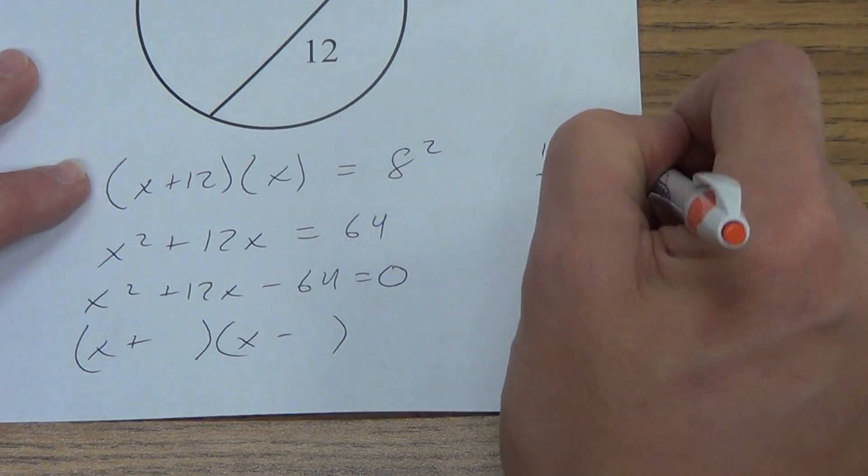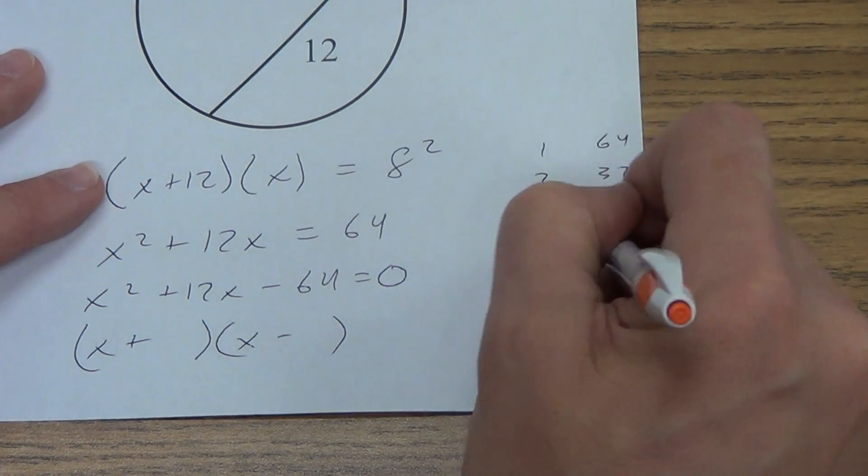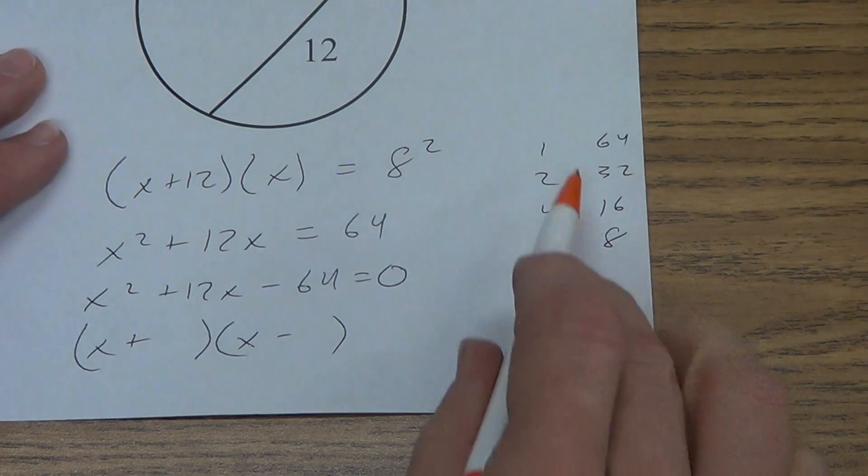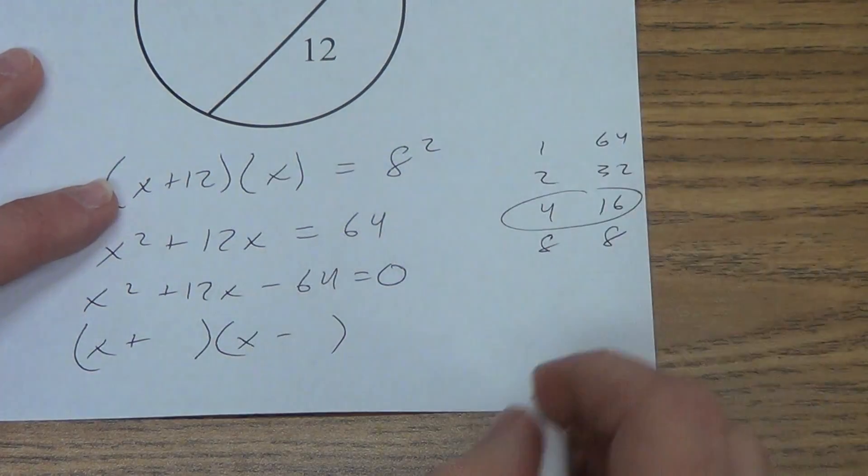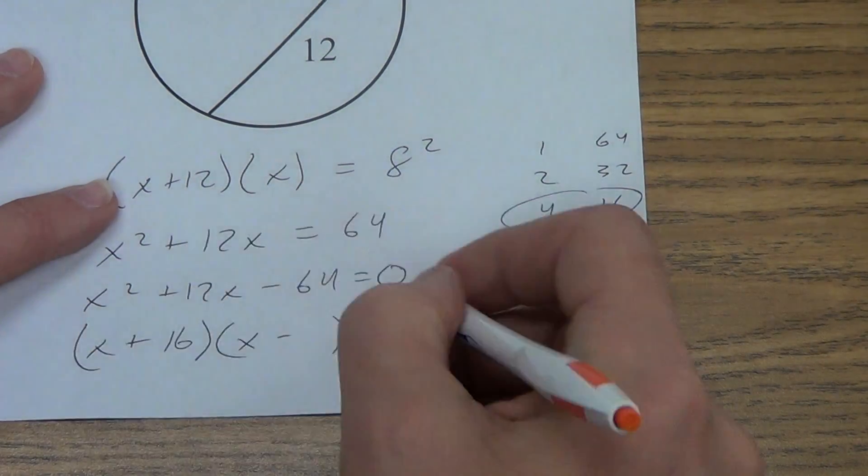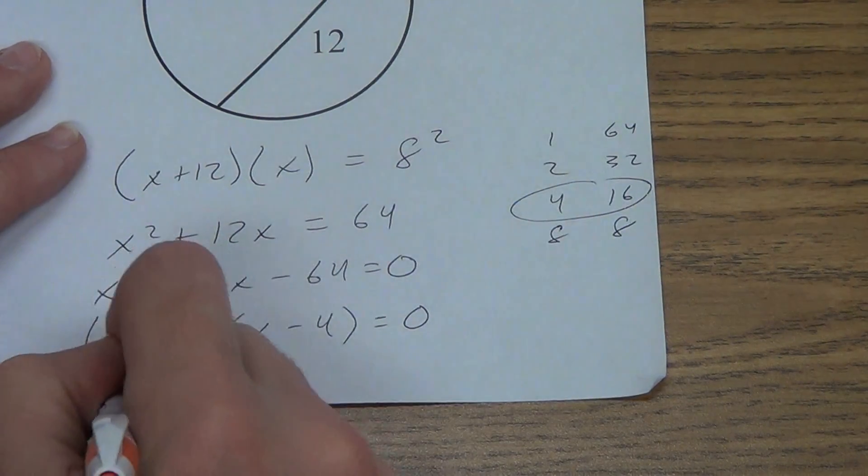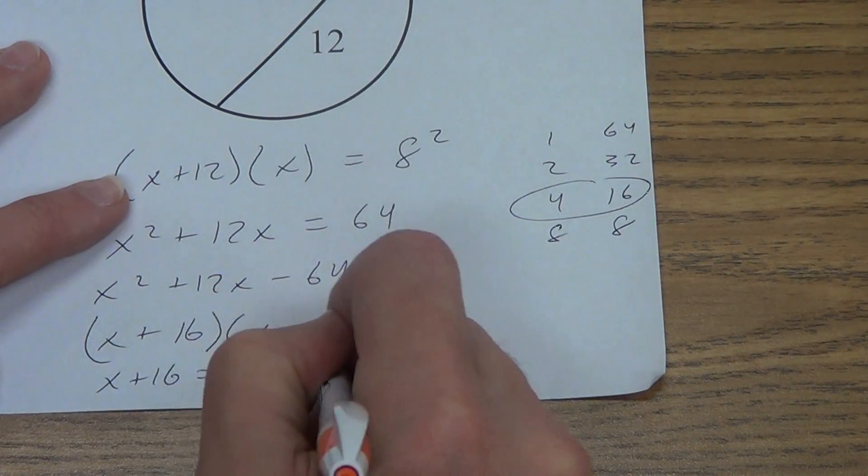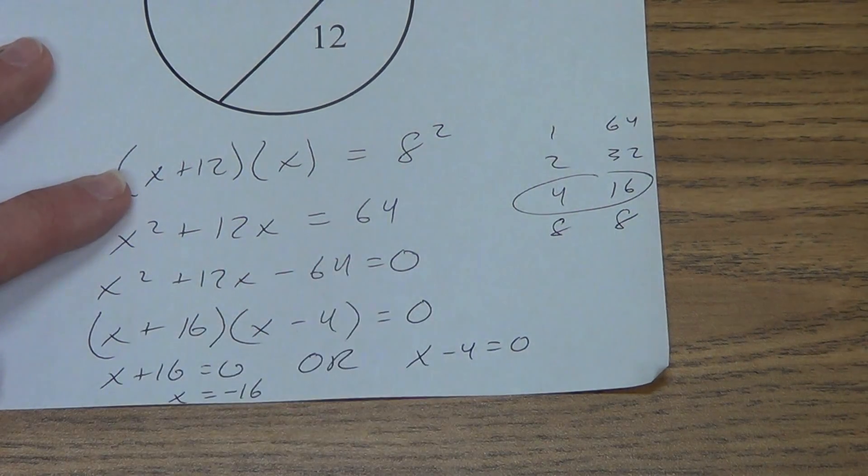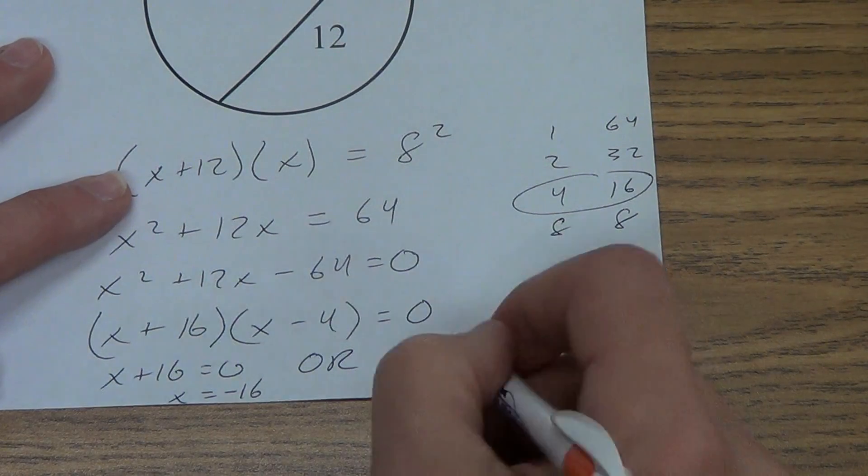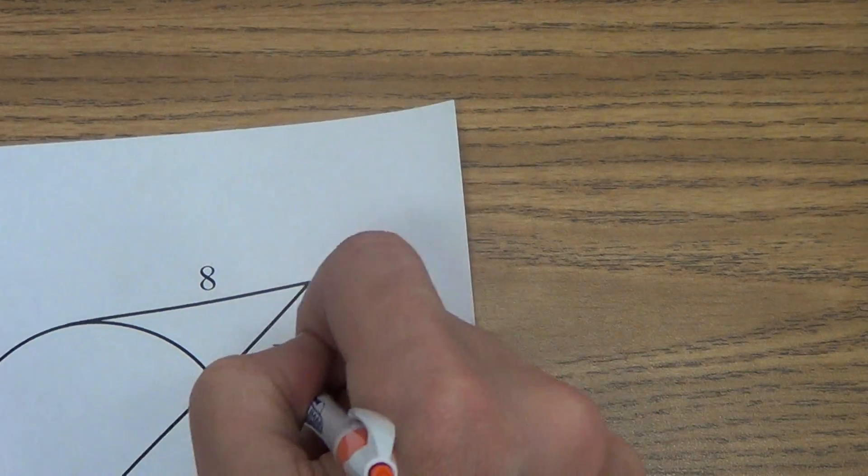1 in 64, 2 in 32, 4 in 16, 8 times 8. Which of those are going to give me the 12? Well, it's definitely the 4 and the 16. I need a positive 12, so the bigger number's got to be positive. Smaller number's negative. X plus 16 equals 0, or X minus 4 equals 0. This would give me X equals negative 16. That doesn't make sense for a length. X equals 4. It's positive. It does make sense for a length, so 4 units.